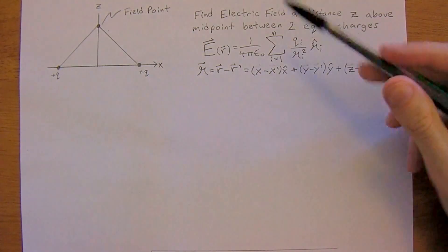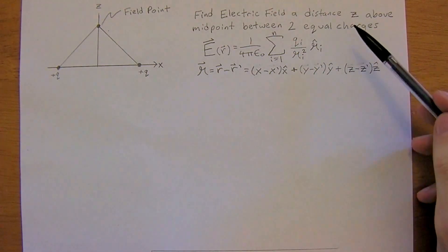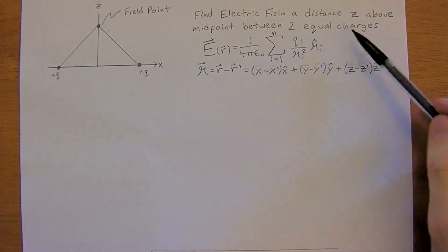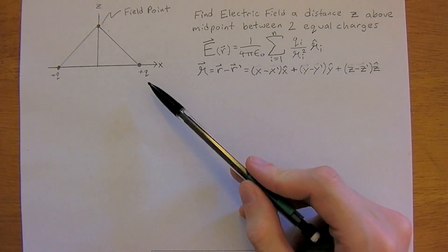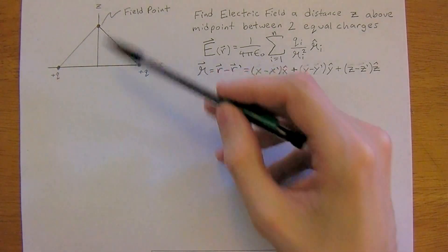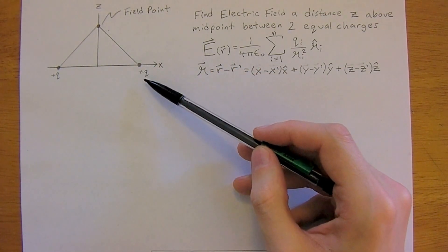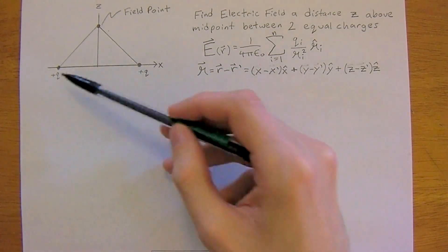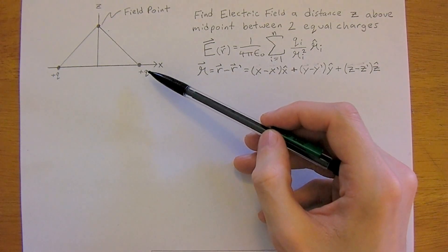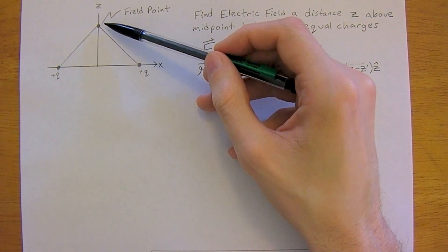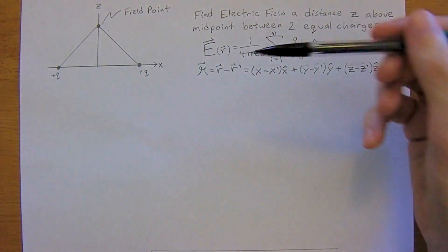In this question, we're asked to find the electric field the distance z above the midpoint between two equal charges. So this is what it looks like. We have the x-axis, the z-axis, and we have a positive charge at these two points, at the source points, and we want to find the electric field at the field point here.